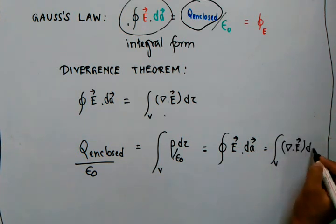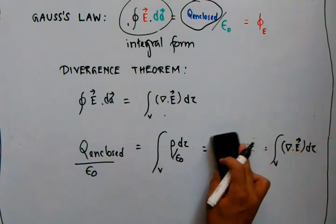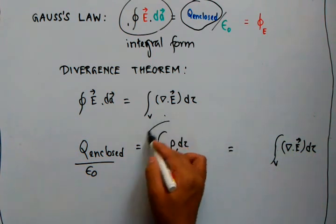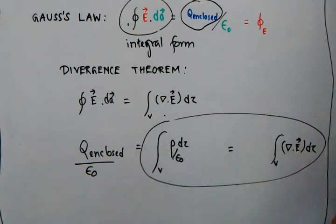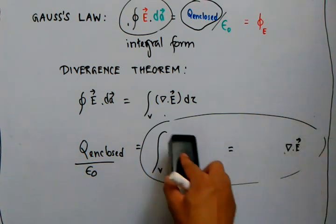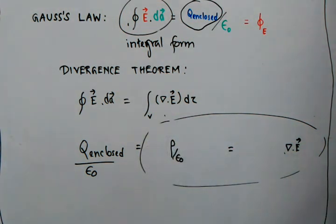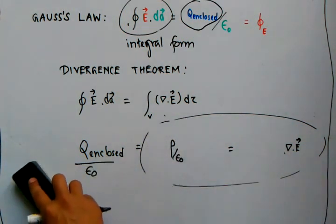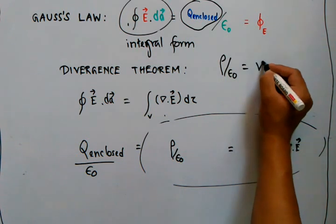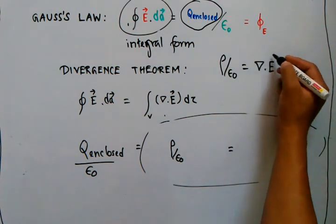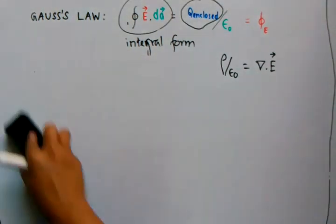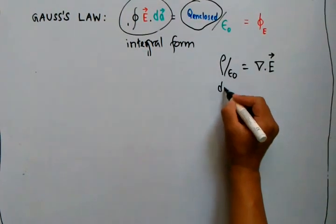From this expression, if we simplify it, we get that rho/epsilon_0 equals the divergence of the electric field. This is the differential form of Gauss's law: ∇·E = rho/epsilon_0.